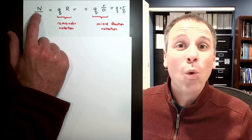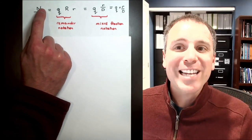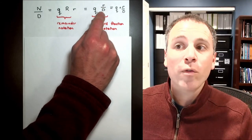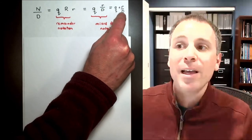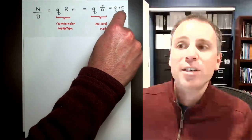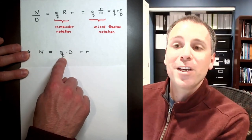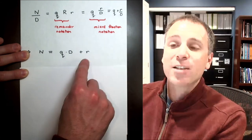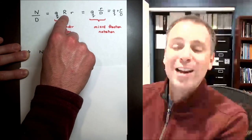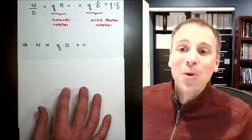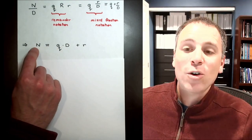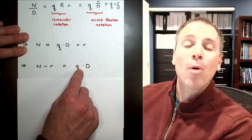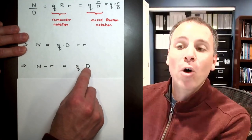When we write N divided by D as Q remainder R, that becomes Q plus R over D in mathematical notation. Multiplying through by D gives us N equals Q times D plus R. This integer division equality — where Q is the largest multiple of D less than or equal to N, and R is what's left over — means that if I subtract R from N, I get a pure multiple of D, and the multiplier is Q.